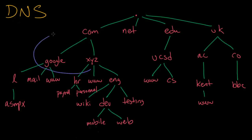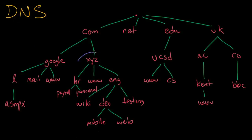Below that is the com zone. It contains itself plus all the dot com domains like Google, Yahoo, Amazon, YouTube, and our fictitious XYZ.com domain. Below that we've got our XYZ company zone. The XYZ zone knows about the divisions within it like engineering and human resources, plus it also contains the www.xyz.com web server.